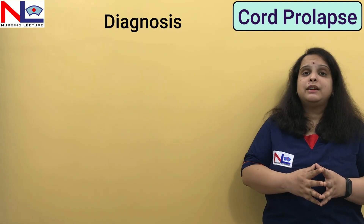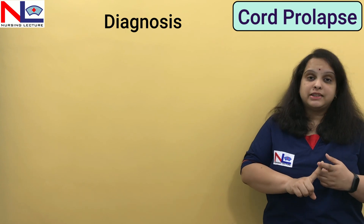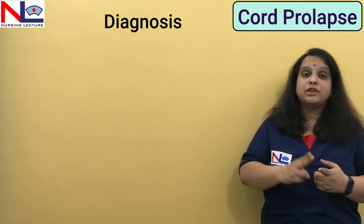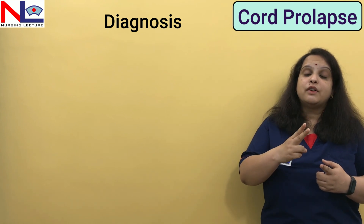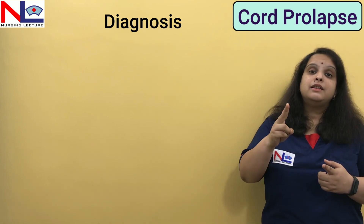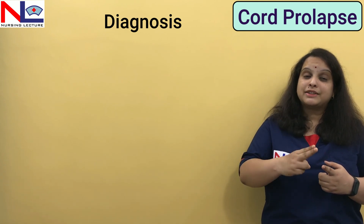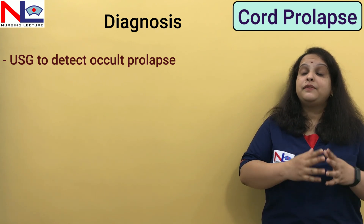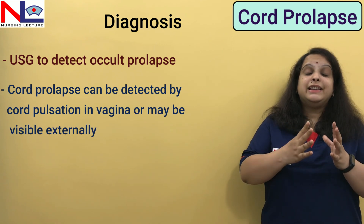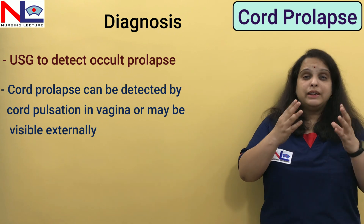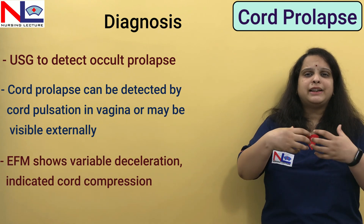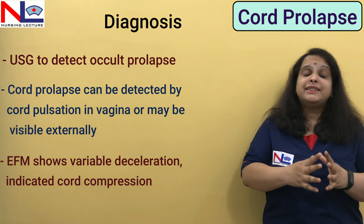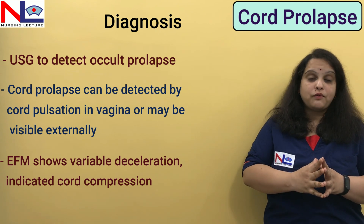To diagnose cord prolapse: if cord presentation is there, we can perform a per vaginal (PV) examination and feel the pulsation of the umbilical cord through the intact membrane. By this we can detect cord presentation. If occult prolapse is present, we can identify it by ultrasonography. If cord prolapse is present, we can easily feel the cord pulsation through the vagina, or in the majority of conditions the cord automatically comes out and is visible to the eye. These features help us diagnose the condition of cord prolapse.